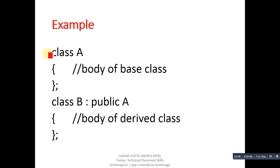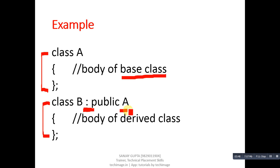Inside the curly braces you define the body of the derived class. In this example, class A is the base class and class B is the derived class, inheriting base class A. There are many forms of inheritance available which will be covered in later tutorials. Whenever you implement the main function, you create an object of class B, and through that object you can also access members of class A.